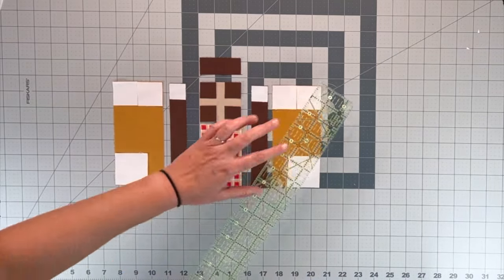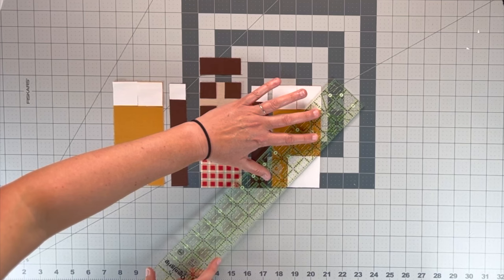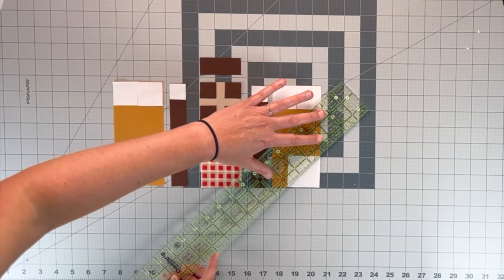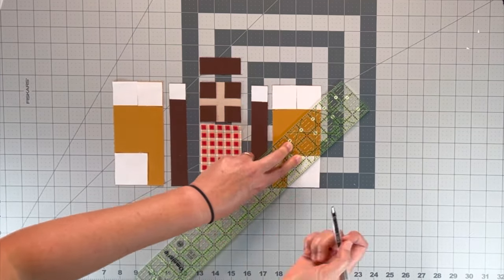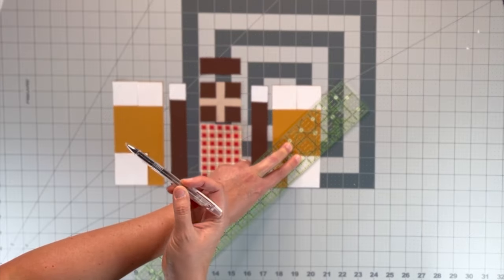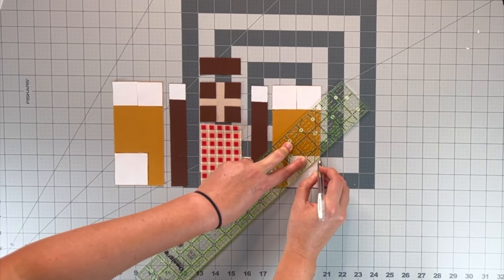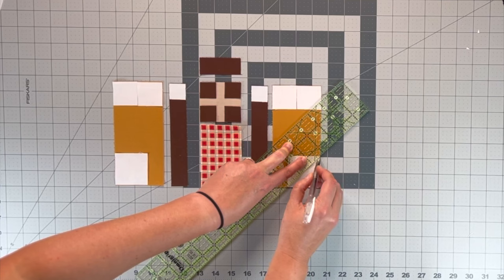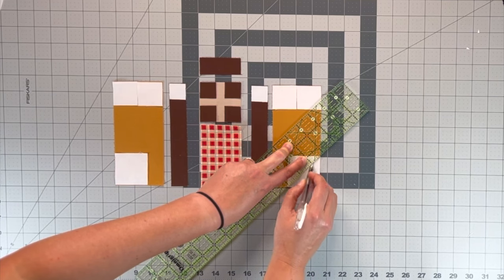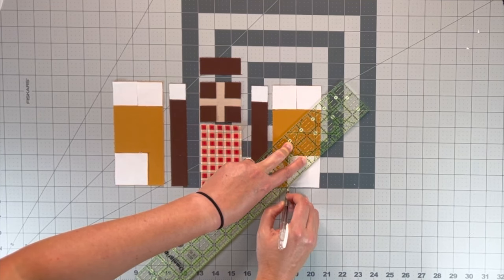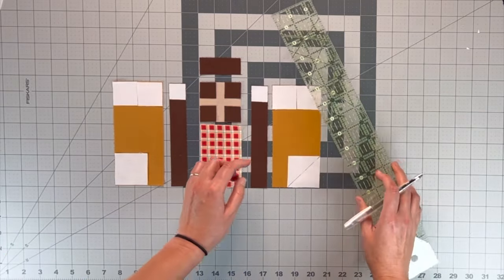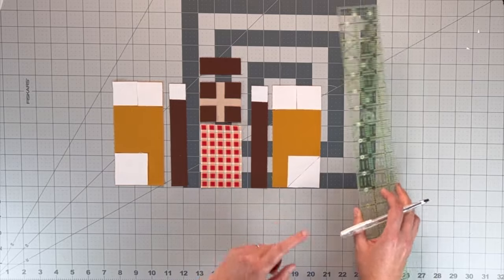And we're going to do some more corner to corner sewing. We did a lot of that last week. So what we're doing is we take a ruler on these pieces, or a pencil, or whatever you'd like. I use these heat erase ink pens that the ink will disappear whenever I press it.